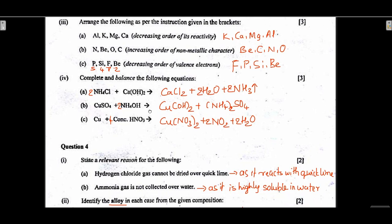Complete and balance the equations. Ammonium chloride plus calcium hydroxide — one method to prepare ammonia gas — gives salt plus water plus ammonia; balanced equation. Copper sulfate plus ammonium hydroxide is a precipitation reaction giving copper hydroxide plus (NH4)2SO4; balanced. Copper with concentrated nitric acid gives copper nitrate, and byproducts NO2 and H2O because it is concentrated; balanced equation.